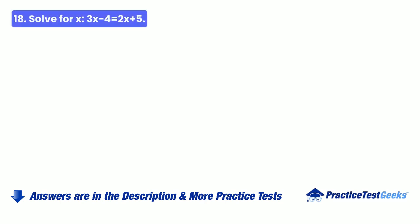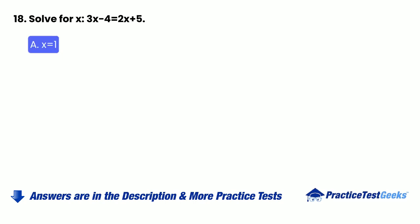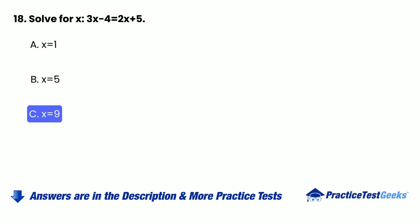Question 18: Solve for x: 3x − 4 = 2x + 5. A. x = 1. B. x = 5. C. x = 9. D. x = negative 1.